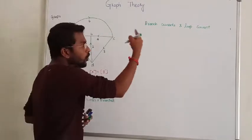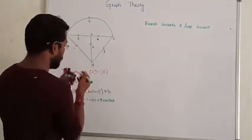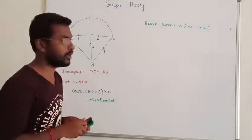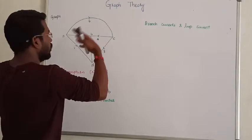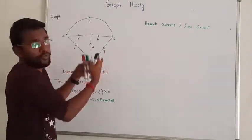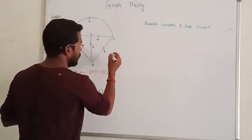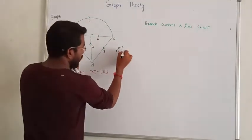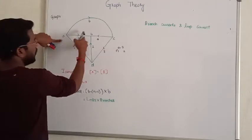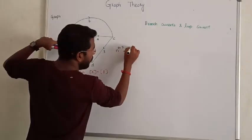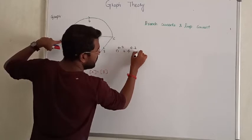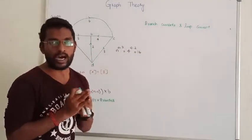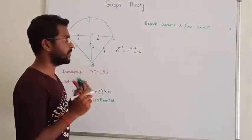We have to select a specific tree. We can form n number of trees in the graph. The number of possible trees is n to the power (n minus 2). For example, if we have 4 nodes: 4 to the power (4 minus 2) equals 4 squared equals 16. So there are 16 possible tree combinations. In the question, a specific tree will be given and we just use that tree.